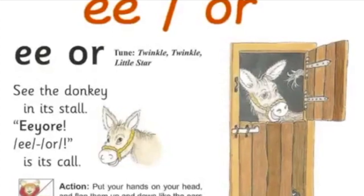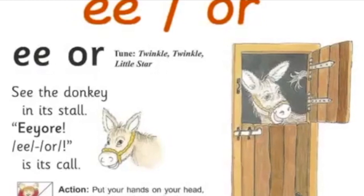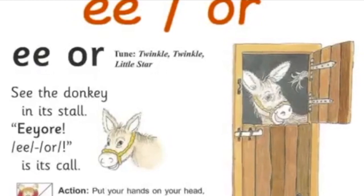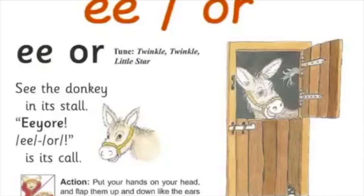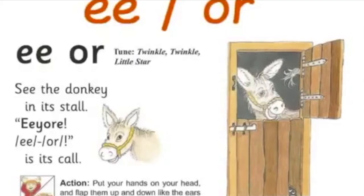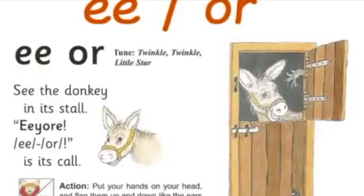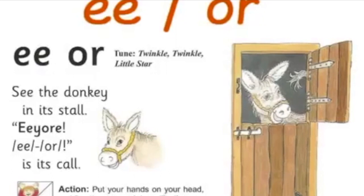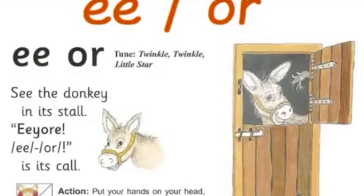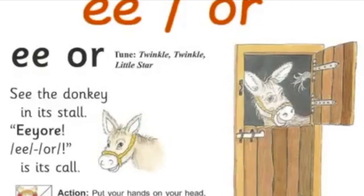See the donkey in its stall. Eeyore, eeyore, is this cool? See the donkey in its stall. Eeyore, eeyore, is this cool? See the donkey in its stall. Thank you.